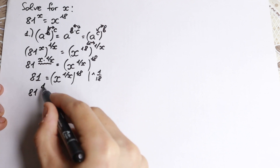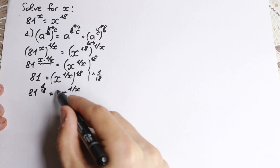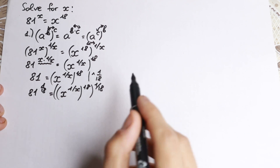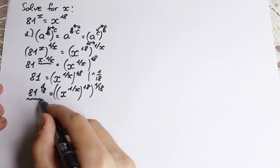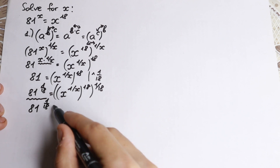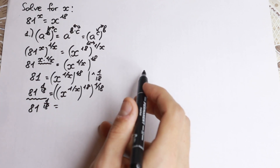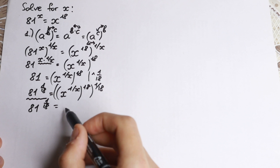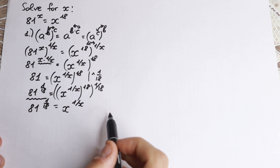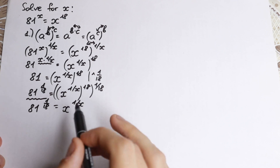81 to the power 1 over 18 equals x to the power 1 over x, all raised to the power 18, and then raised to the power 1 over 18. On the right hand side, 18 times 1 over 18 equals 1, so we will have x to the power 1 over x. Now it looks like we can solve it by inspection, but for most students it's still difficult.